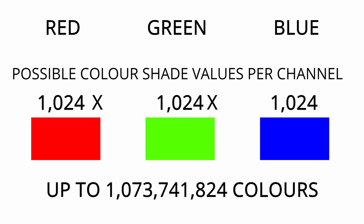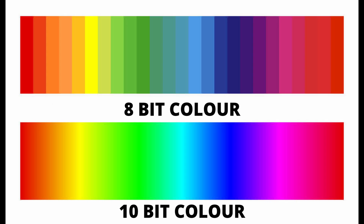When you multiply those together you're actually now capturing in 10-bit 1,073,741,824 possible colour shade values. This is a huge increase, and what it does is it allows your colour shades between each colour in your images to be blended much smoother. Here you can see the 8-bit colour where there's banding between each colour, and with 10-bit colour you're getting a much smoother gradient between each colour, so it looks much softer on the eye.